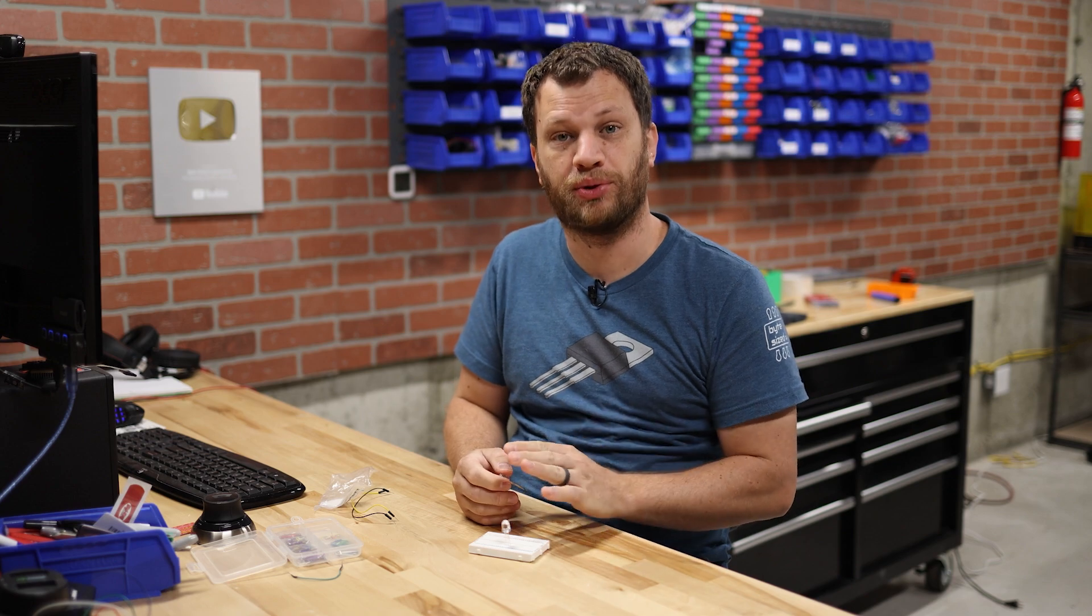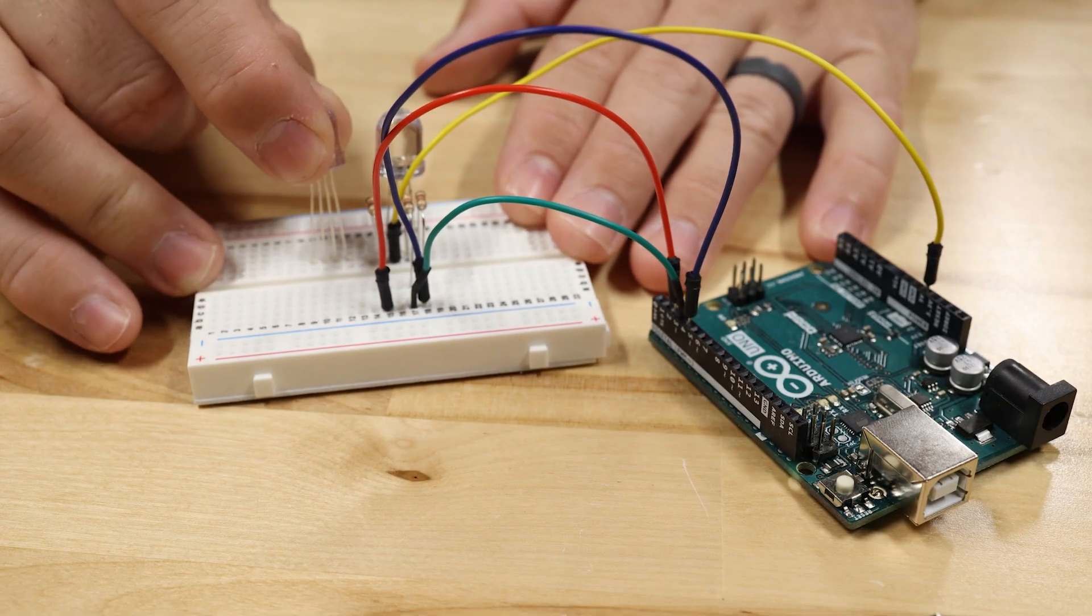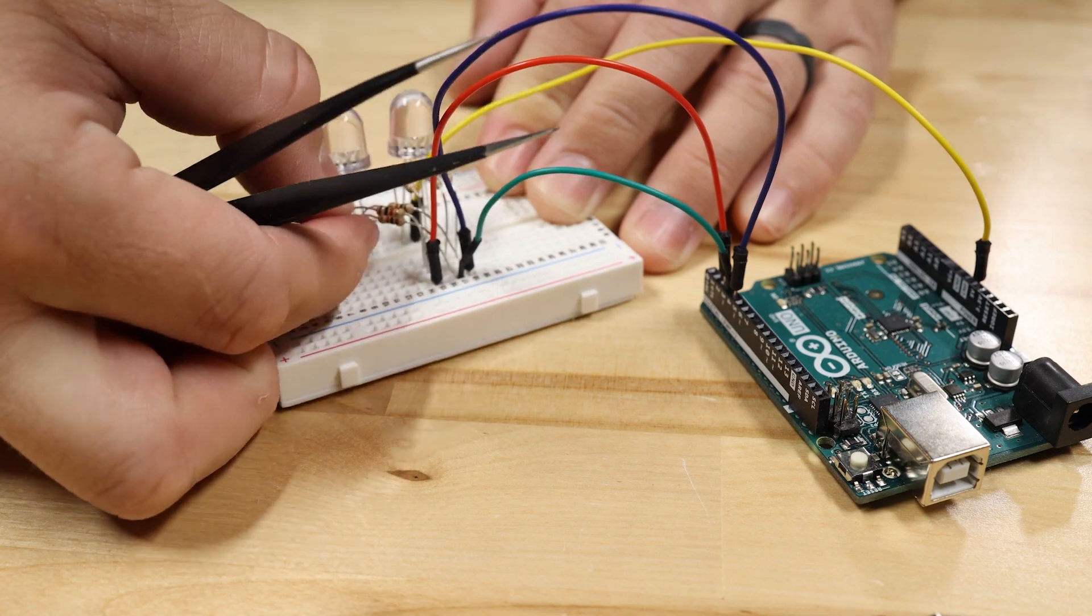Now let's add a second RGB LED. The red, green, and blue cathodes get connected to the same GPIO pins through current limiting resistors just like before. The two red cathodes share a GPIO pin, the two green cathodes share a GPIO pin, and the two blue cathodes share a GPIO pin.